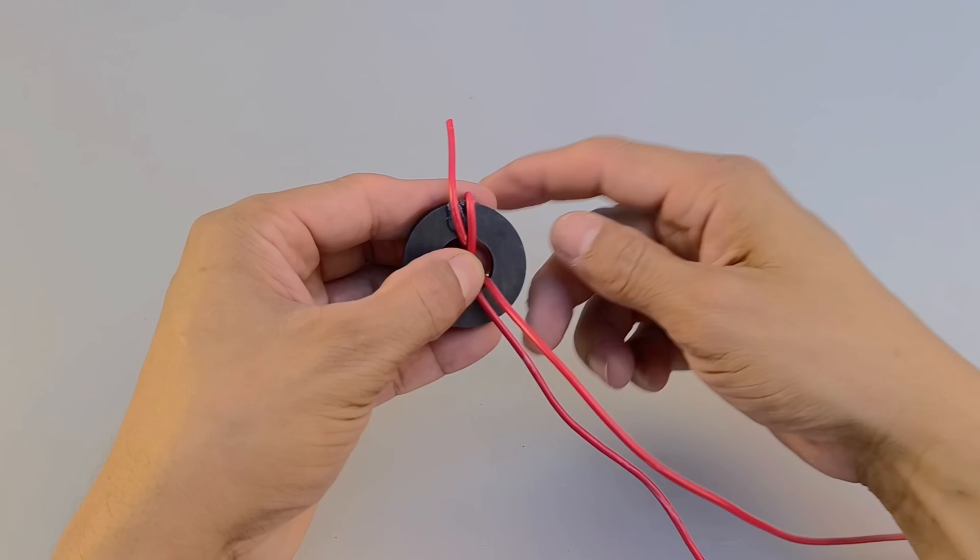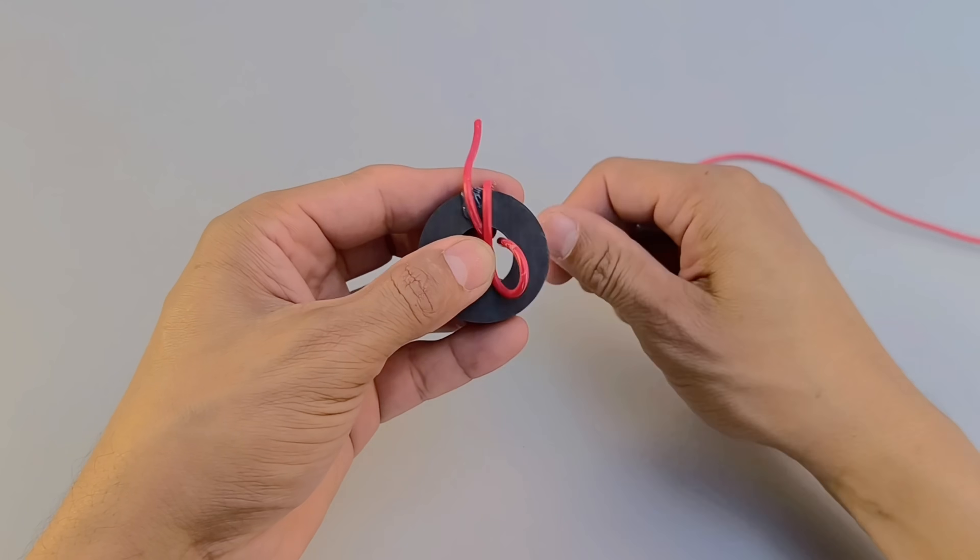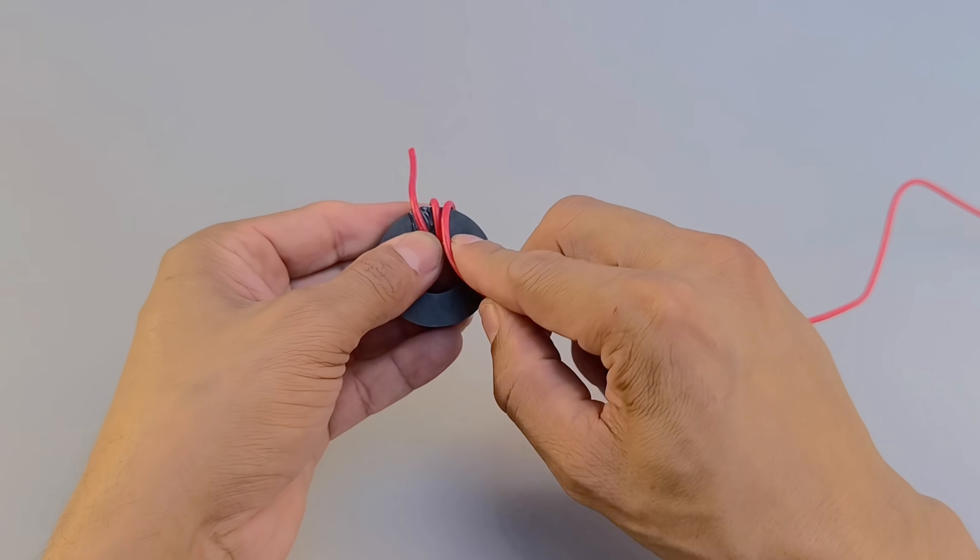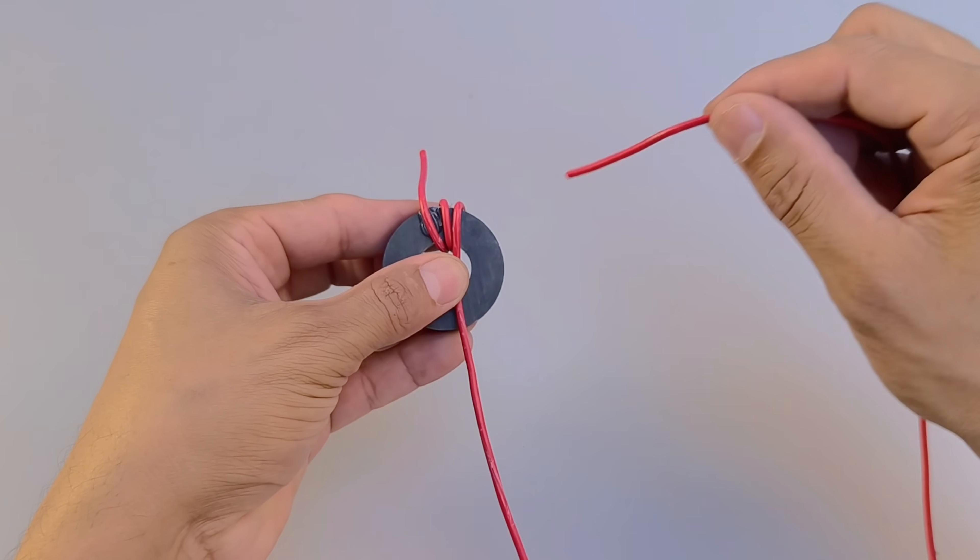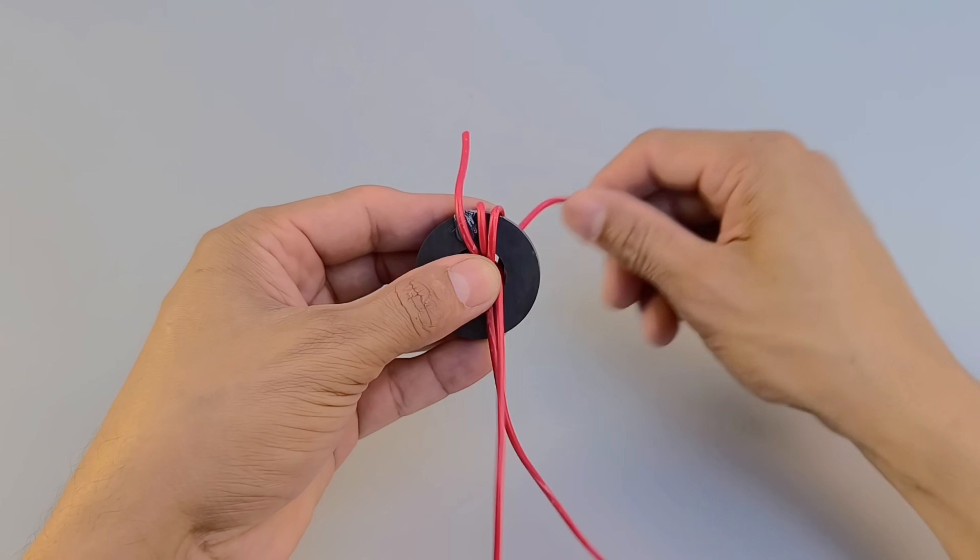Take one of the wires and wrap it around half of the magnet, making about seven tight turns. Repeat the same process with the second wire, wrapping seven turns around the other half of the magnet.